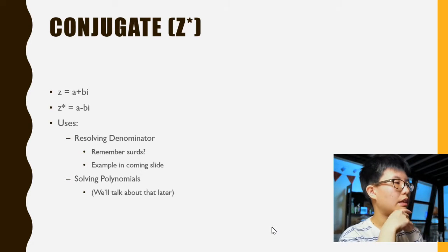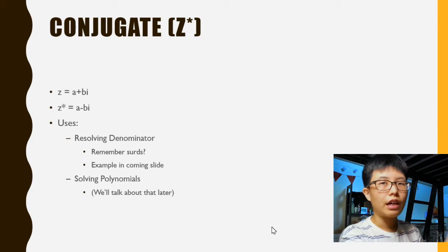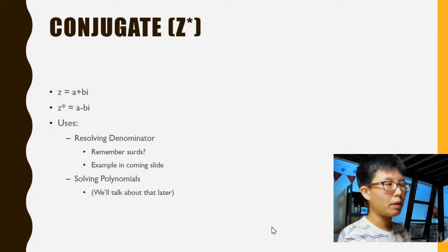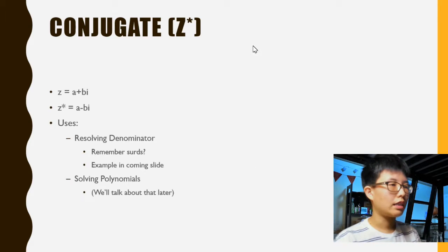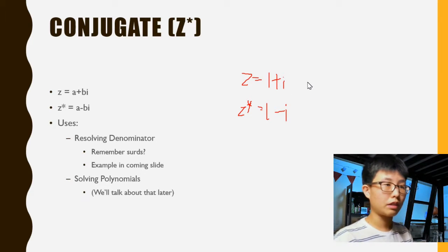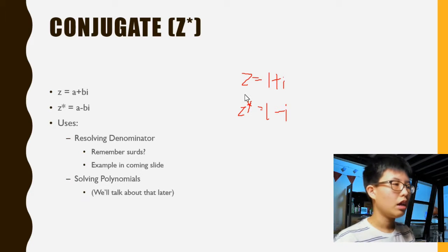Now we're going to talk about the conjugate. The conjugate is basically where the real part stays the same - so if it's a, it's still a - but the imaginary part, you just put a negative sign in front of it. For example, if we have z equals 1 + i, then the conjugate of z will be 1 - i. You just take the imaginary part and if it's positive, flip it to negative. What do we use a conjugate for? We use it to resolve denominators, and it's very useful in solving polynomials.